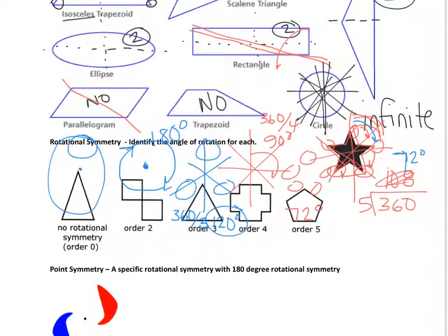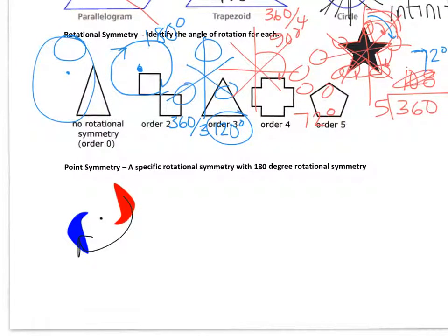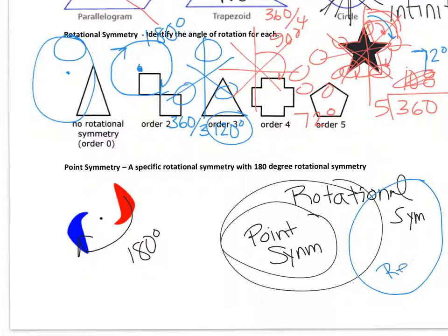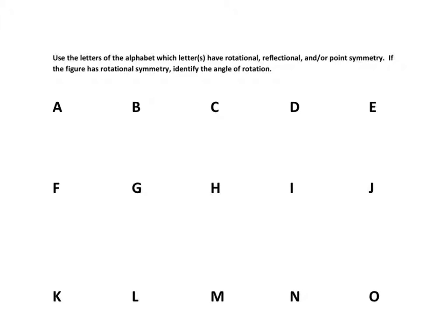Point symmetry is a special type of rotational symmetry that's 180 degrees. If you rotate a figure 180 degrees and it looks the same, it has point symmetry. Having rotational symmetry doesn't mean you have reflectional symmetry — there are figures that have rotational symmetry but no line of symmetry, like this figure here where I can't draw a line of symmetry anywhere.